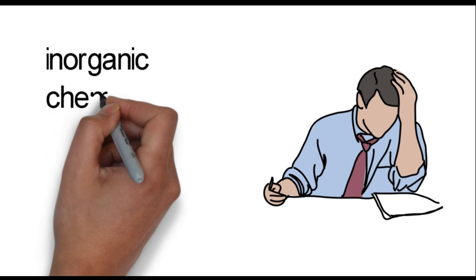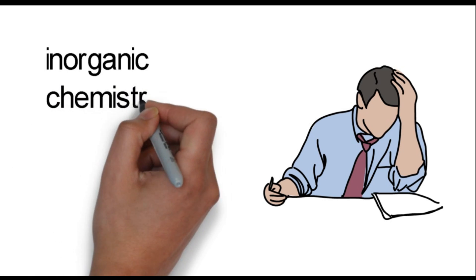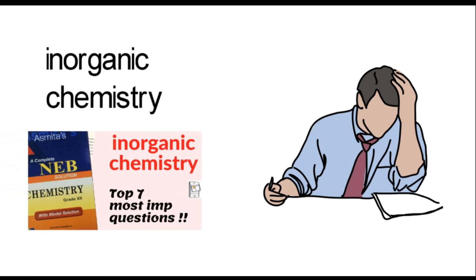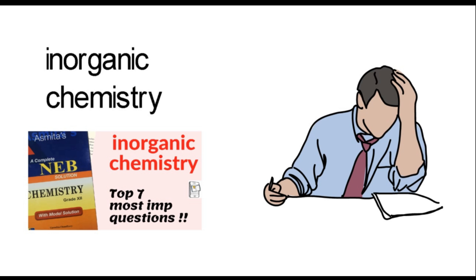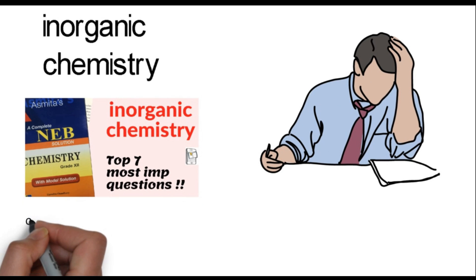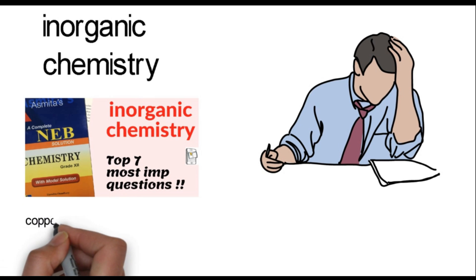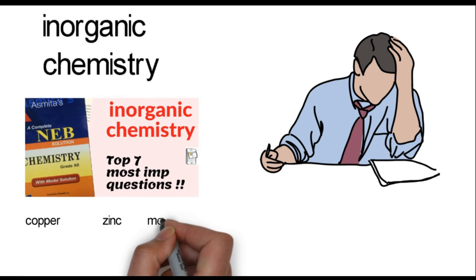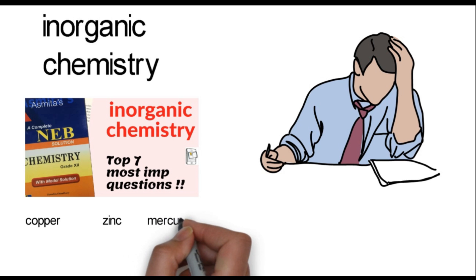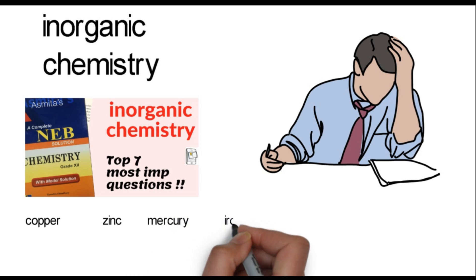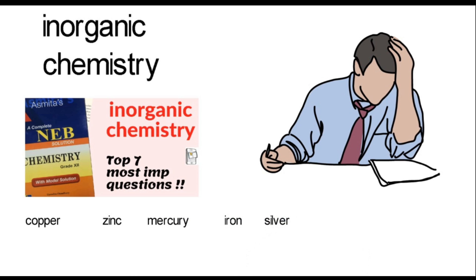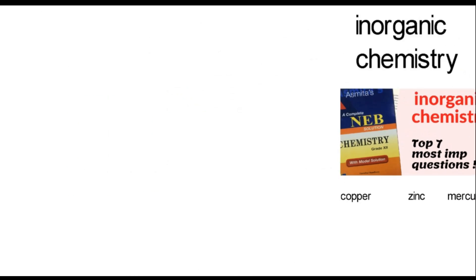If you are interested in this video, I will discuss the most important questions from Inorganic Chemistry in Class 12 Chemistry. There are 500 metals found, and they include Copper, Zinc, Mercury, Iron, and Silver.